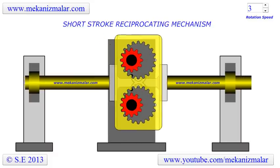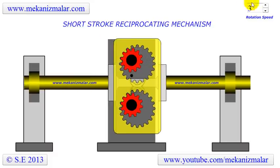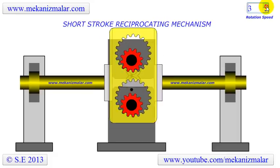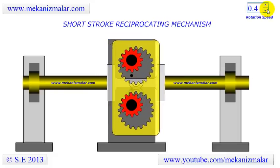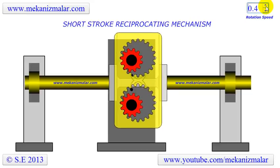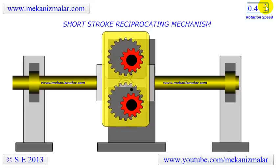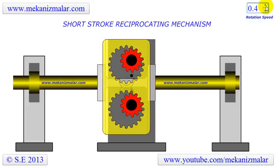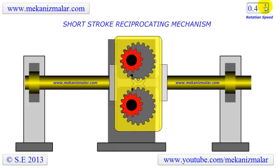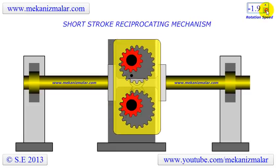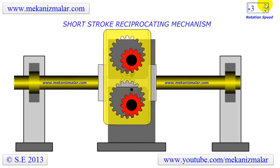Reciprocation motion mechanisms play an important role in many devices and machines we use. One well-known and fundamental reciprocation motion mechanism is Whitworth's quick return mechanism. This mechanism is very important because we have the ability to adjust the stroke of the reciprocation motion. It also has a faster speed in one direction than the other, making Whitworth's quick return mechanism one of the fundamental reciprocation devices.